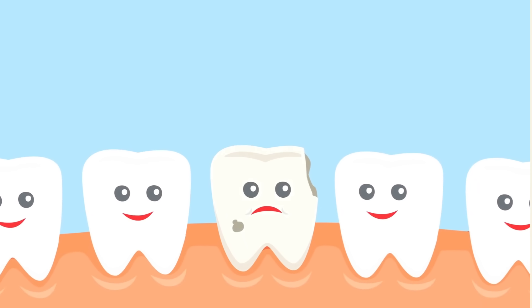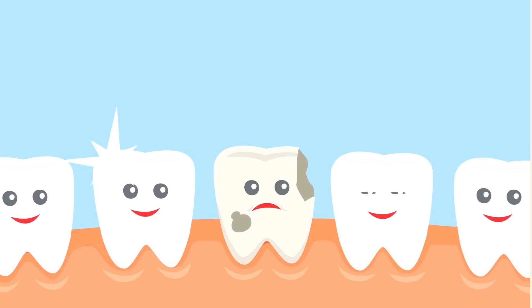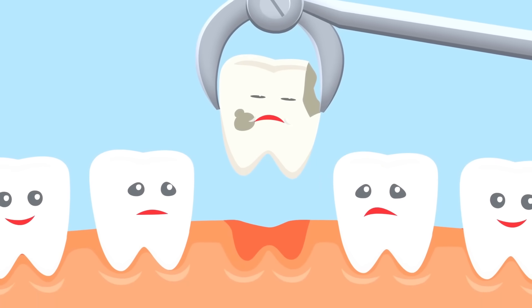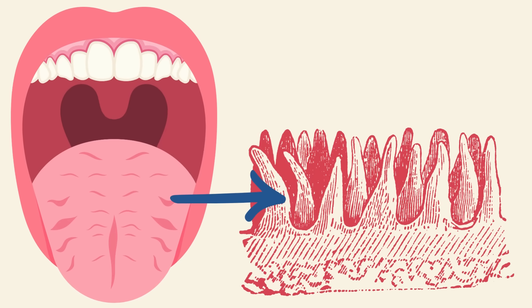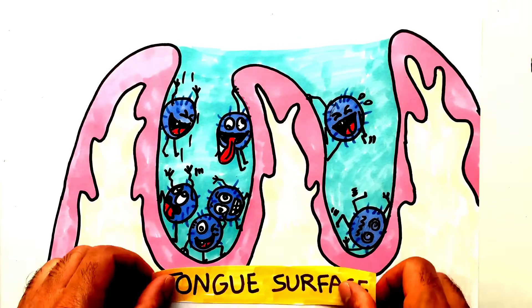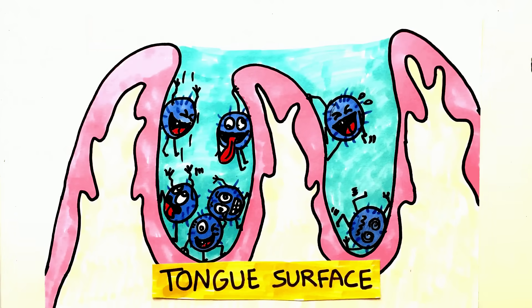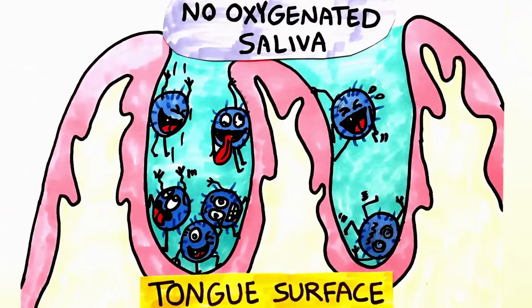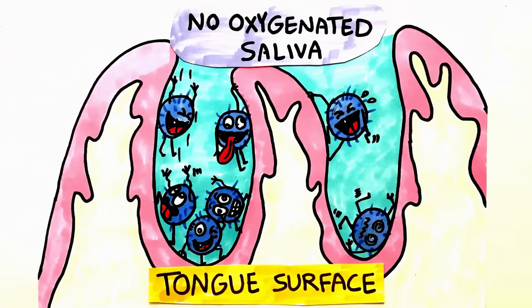On a tooth surface, bacteria can create biofilms to finally damage the tooth in the form of dental plaque. The tongue's surface provides a unique ecological site for the bacteria due to the presence of several papillae. The microscale spaces between these papillae tend to not receive oxygenated saliva, providing a nice environment for the anaerobic bacteria to colonize there.